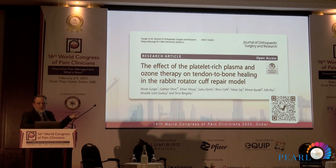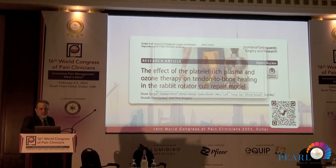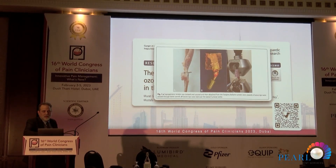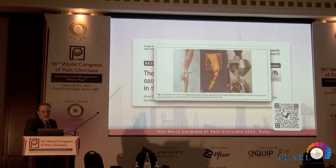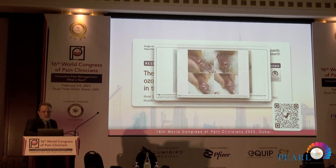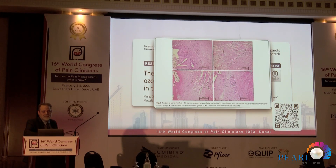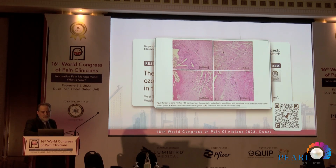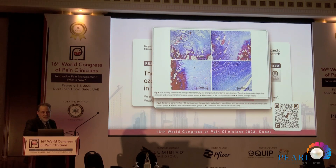This is another animal study investigating the healing effect of pre-activated ozone on the supraspinatus tendon in rats. You can see the isolation and strain process of the tendon and the repair process. This is the histological staining with hematoxylin and eosin, and you can see high vascularity and cellularity in the ozone-treated group. This picture demonstrates collagen fiber continuity and arrangement of tendon, with improvement in the ozone-treated group shown by Masson's trichrome stain.